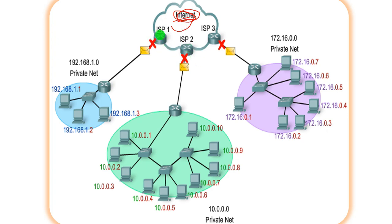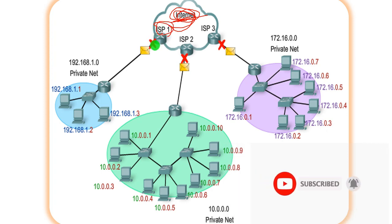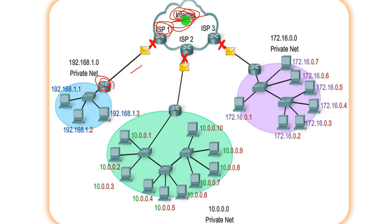The internet service provider connects to the local network. The ISP is used to configure the public network. There is a public global internet and a global server, and the internet service provider provides a network or internet to this local network. The private network and global internet are like a wide area network — the ISP connects them.